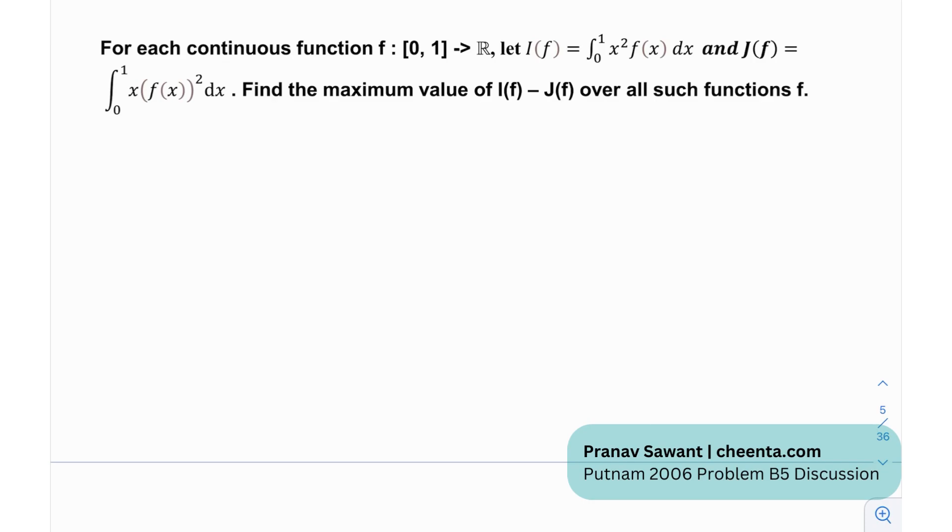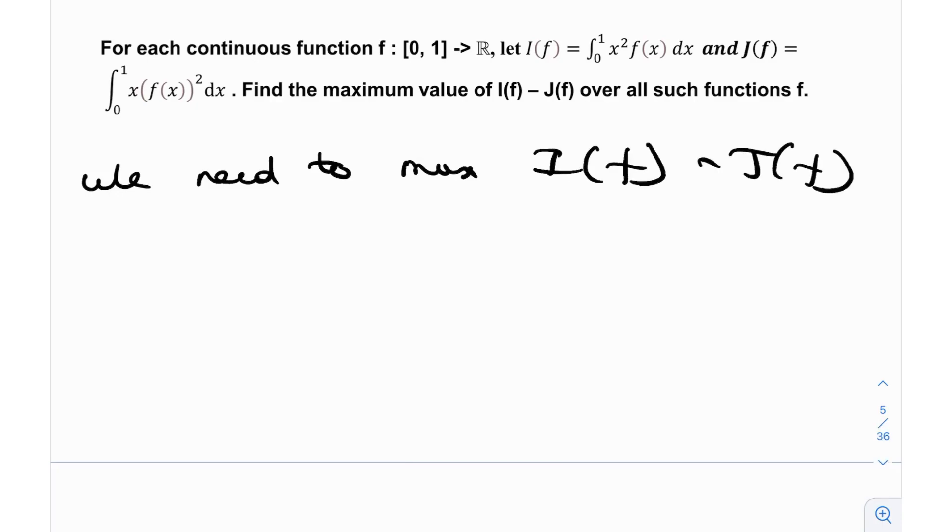So what do we exactly need to maximize? We need to maximize i(f) minus j(f), and let me just call that value as capital K. Whatever this K is, you need to maximize K. So K is essentially equal to the integral from 0 to 1 of x²f(x) minus x·f(x)² dx.